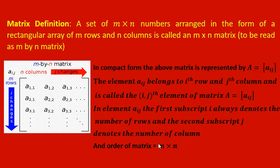In the element Aij, the first subscript i always denotes the number of row and the second subscript j denotes the number of column. So suppose A31 — the 3 indicates third row and 1 indicates first column. Similarly A33 indicates third row and third column. A22 indicates second row and second column.